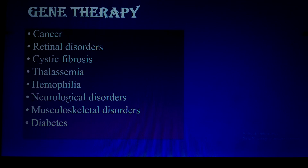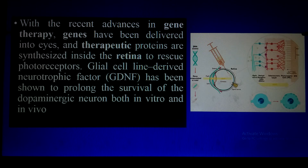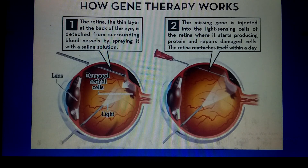Gene therapy is available for cancer, retinal disorders, cystic fibrosis, thalassemia, hemophilia, neurological disorders, musculoskeletal disorders, and diabetes. For retinal eye disorders, the gene therapy available is Luxturna. With recent advances, genes have been delivered into the eye and therapeutic proteins are synthesized inside the retina to rescue photoreceptors. Glial cell line-derived neurotrophic factors have been shown to prolong survival of dopaminergic neurons both in vitro and in vivo. As shown here, the gene is injected into the retina, which then produces the desired protein and prevents disease.